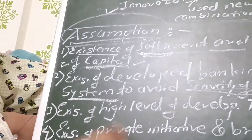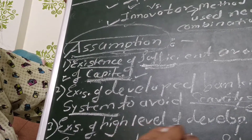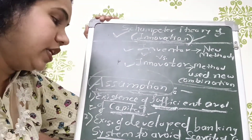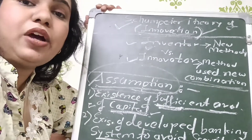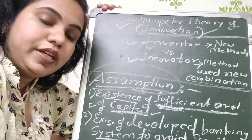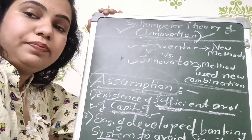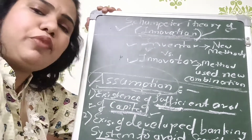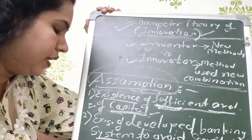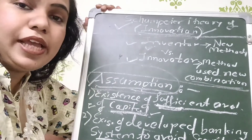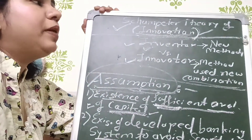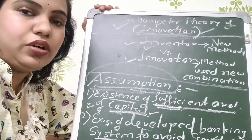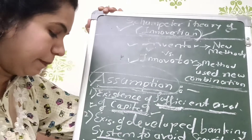The third assumption is the existence of a high level of developed technology. If a manufacturer has high-level technology available — best quality machinery, fastest ways to manufacture products, electricity — then innovation is possible. With high-level technology, you can innovate, and after innovation your company growth as well as the country's growth is definitely there.